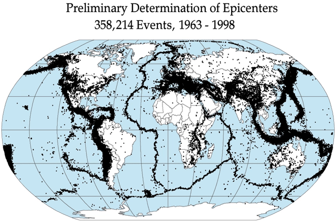There are three main types of fault, all of which may cause an interplate earthquake: normal, reverse, and strike-slip. Normal and reverse faulting are examples of dip-slip, where the displacement along the fault is in the direction of dip and movement involves a vertical component. Normal faults occur mainly in areas where the crust is being extended, such as a divergent boundary. Reverse faults occur in areas where the crust is being shortened, such as at a convergent boundary.